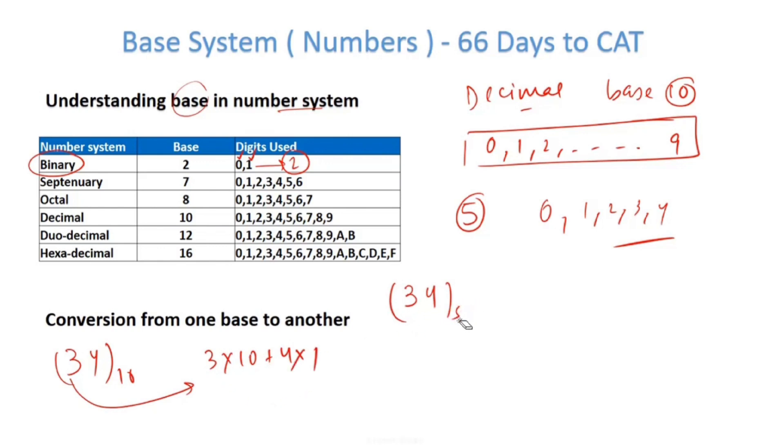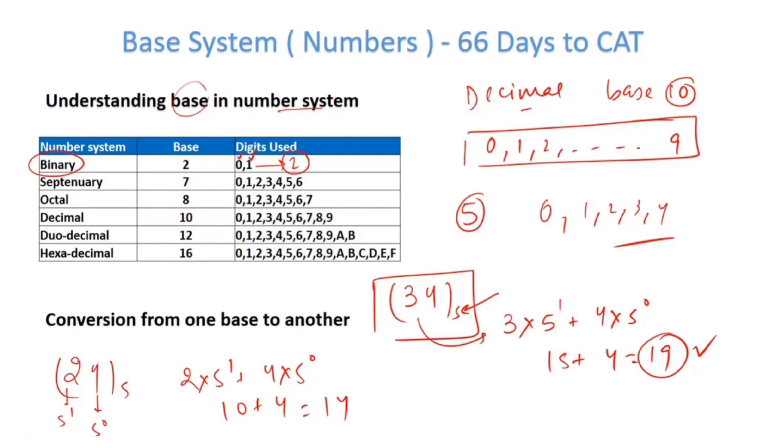Similarly, here the base is 5. So how can I represent it? I can represent it as 3 into 5 to the power 1 plus 4 into 5 to the power 0. So this becomes 15 plus 4, 19. Now this is about converting from any base to the decimal number system. How can I convert a number from decimal to any particular base? Let's try and understand that also.